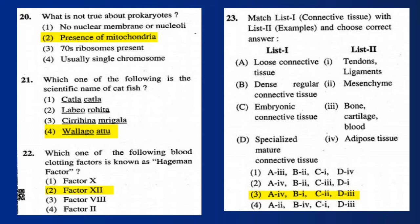Question 23 answer: A. Loose connective tissue — adipose tissue; B. Dense regular connective tissue — tendons and ligaments; C. Embryonic connective tissue — mesenchyme; D. Specialized mature connective tissue — bone, cartilage, and blood.